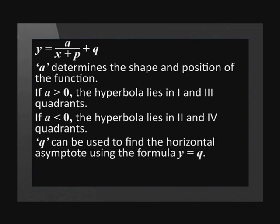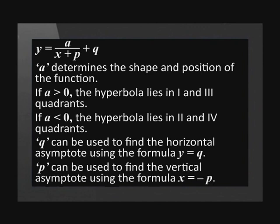q can be used to find the horizontal asymptote using the formula y = q. p can be used to find the vertical asymptote using the formula x = -p.